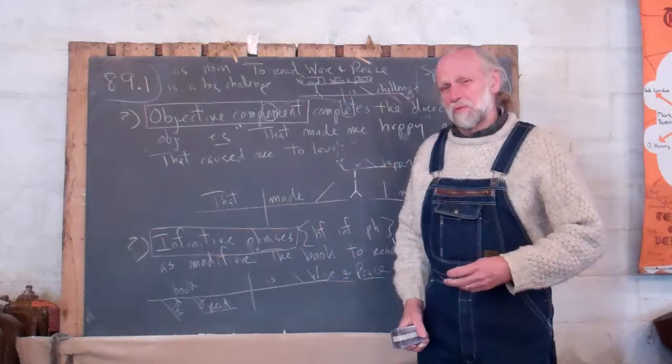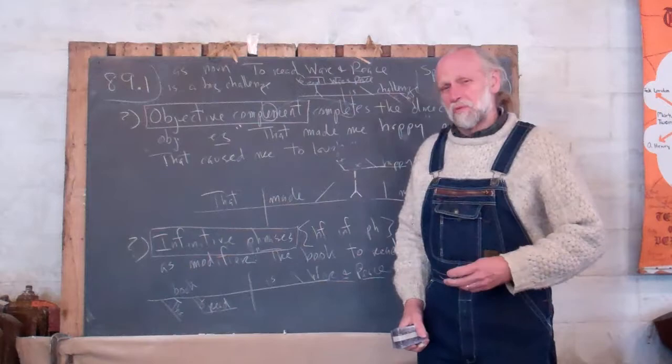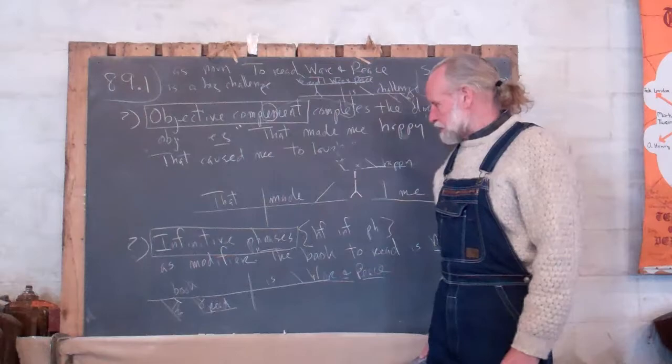And that's the part that I dealt with earlier in this course. An infinitive is a verb preceded by the word T-O, to do something.